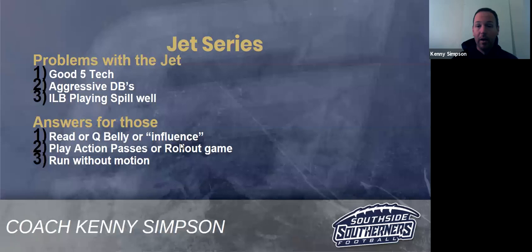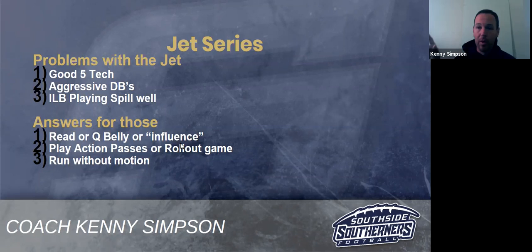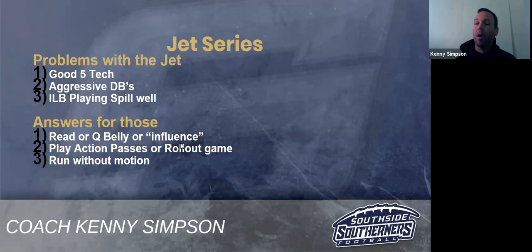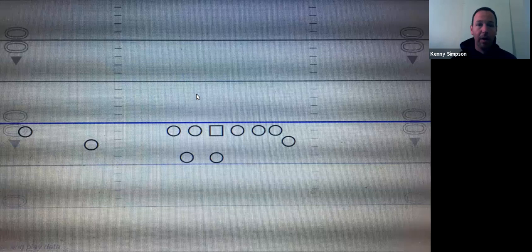If inside linebackers are killing you play-side, we'll do QB belly — a big play for us — belly read, counters, and influence blocks. I'll show you one where we block buck sweep and run jet sweep as an answer to handle your inside linebacker. Or we'll run the same play without motion if they're triggering really hard off the motion. We'll just snap to the quarterback and run jet with him, or put our F on the strong side and run it with him.